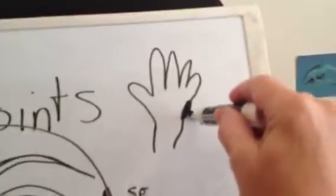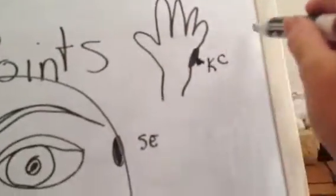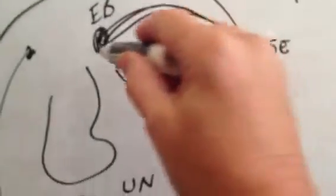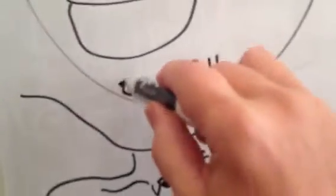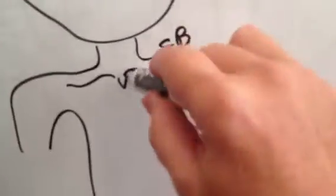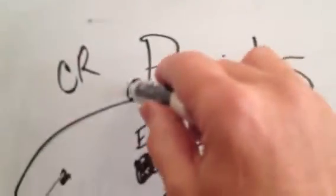So you start on the karate chop with the setup statement, and then you go to the eyebrow point and tap with the reminder phrase, underarm, undernose. Tap three to five times with your fingers on each one, and then a couple on the crown. That's the round, and then you're done as far as the shortcut round goes.